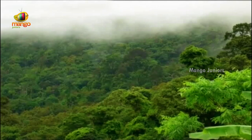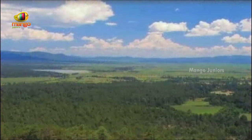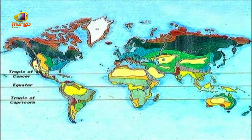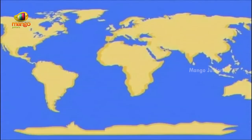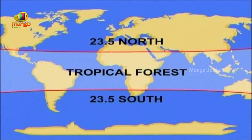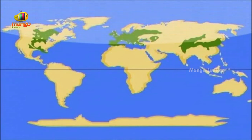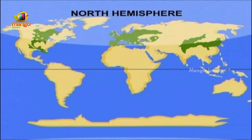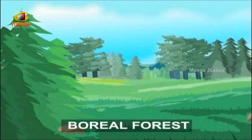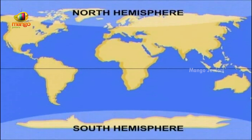The forest biomes are largely classified according to the seasons and they mainly depend on the type of climate. Today, the three major types of forests that inhabit the Earth, classified according to the latitude, are: Tropical forests, spread across the tropical zone from 23.5 degrees north to 23.5 degrees south; Temperate forests, found between 23.5 and 66.5 degrees in both hemispheres; and Boreal forests, or Taiga, found around 66.5 degrees north to the poles.